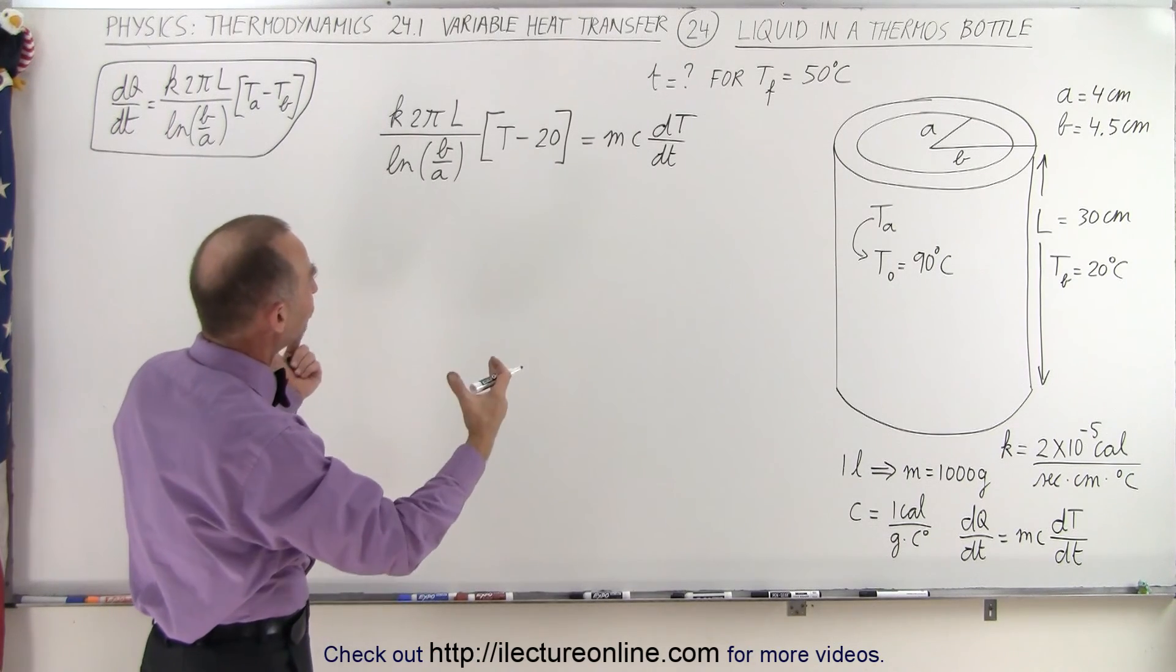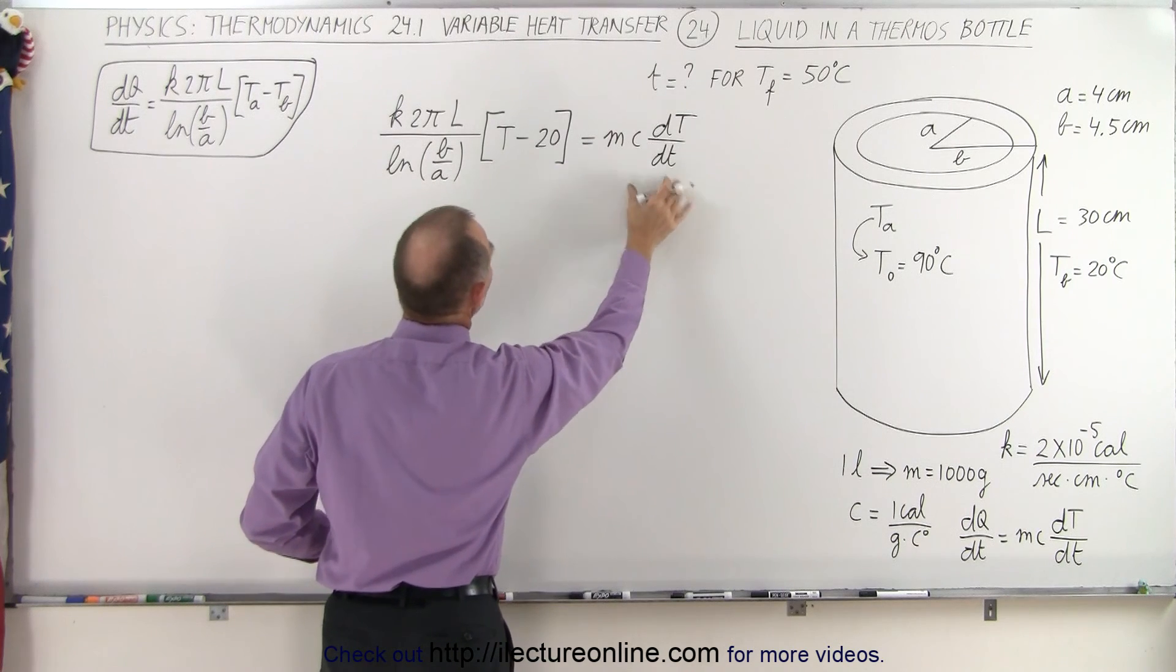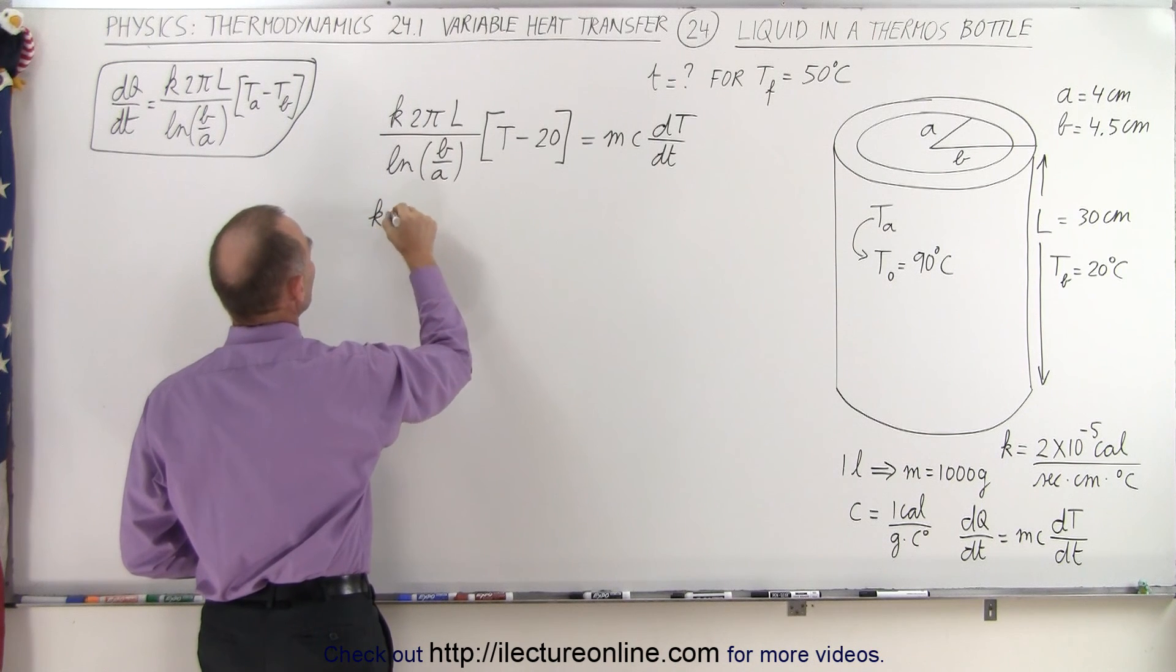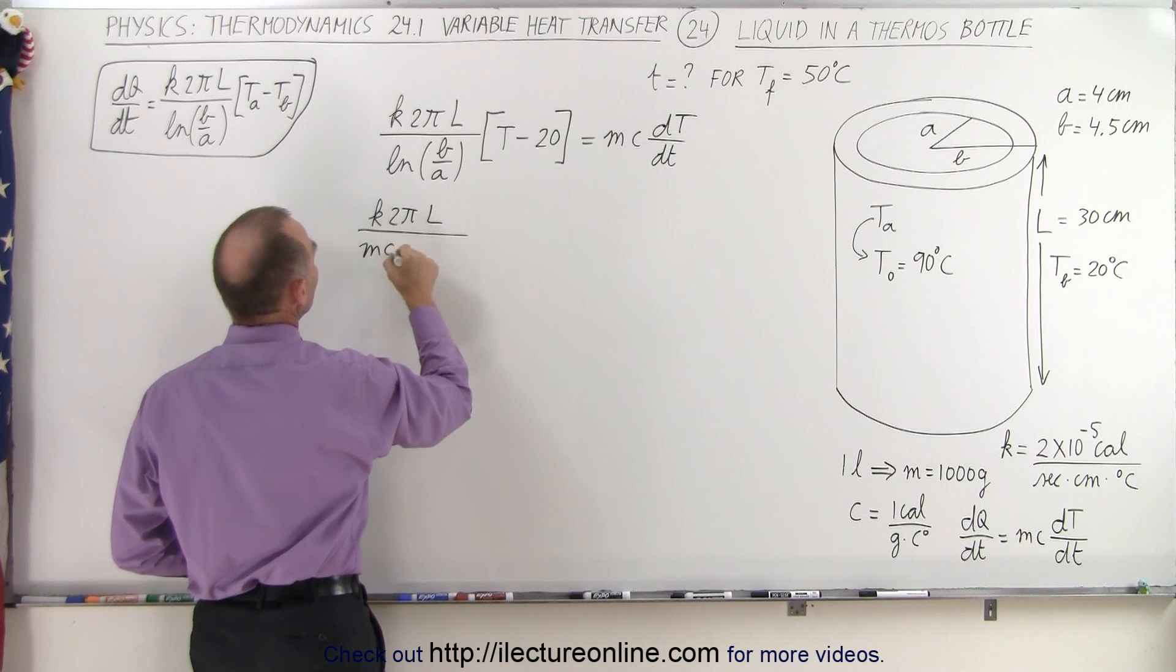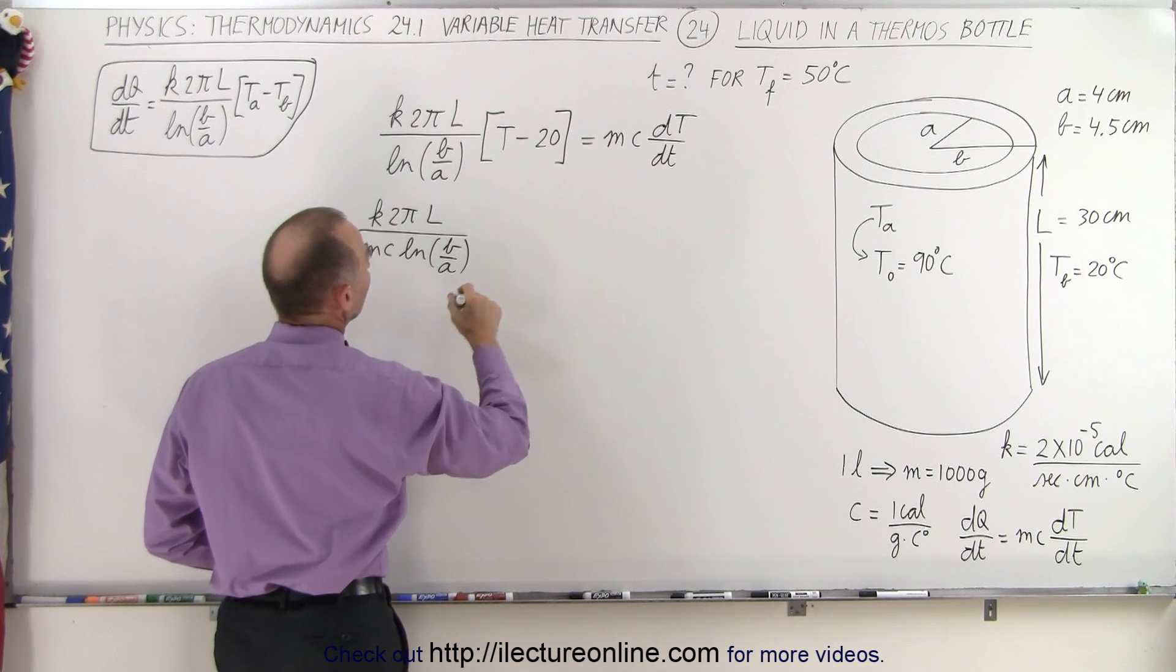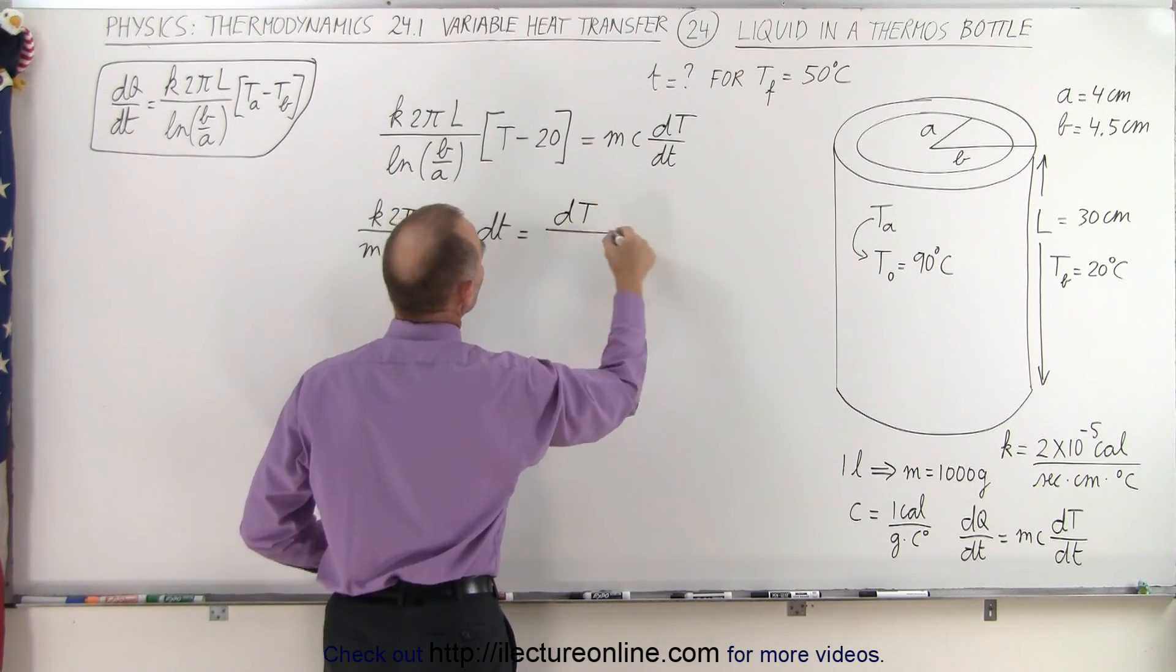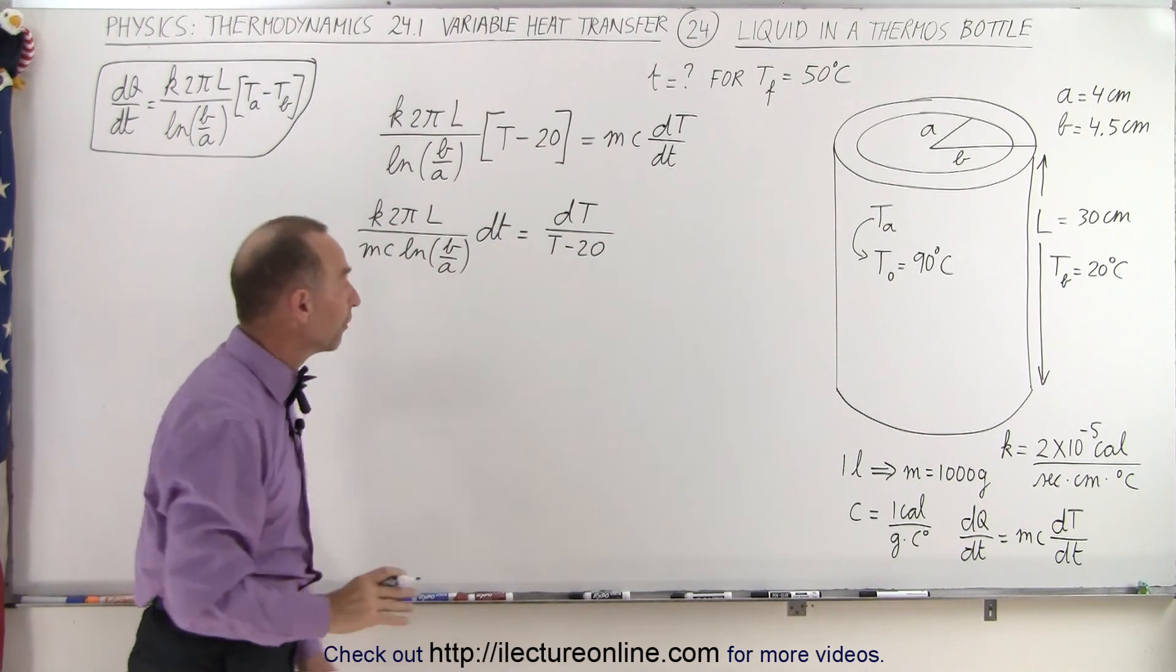So now what we want to do is we have a differential equation. We want to separate the variables, put the temperature on the right side, the time on the left side, and let's move all the constants on the left side. So on the left side we end up with K 2πL divided by MC times the natural log of B over A, and that's going to be times dt. On the right side, we're going to have dT divided by T minus 20. So you can see we now have a differential equation.